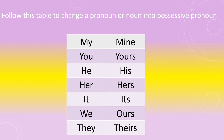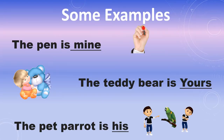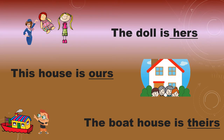Here are some example words for possessive pronouns: mine, yours, his, hers, its, ours and theirs. Sentence examples: The pen is mine. The teddy bear is yours. The pet parrot is his. The doll is hers. This house is ours. The boat house is theirs.